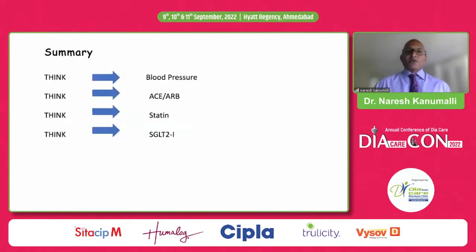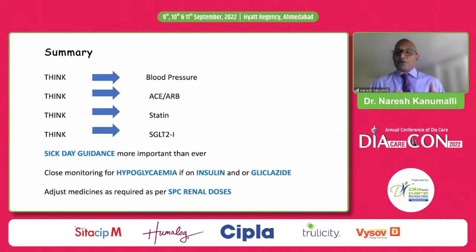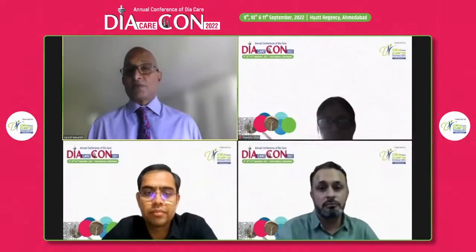In summary, when you see a person with diabetes or chronic kidney disease, think about blood pressure, consider ACE inhibitors or ARBs, think about a statin, and don't forget SGLT2 inhibitors. Sick day guidance rules are important — remember which drugs should be stopped to prevent acute kidney injury. Monitor closely for hypoglycemia with insulin or gliclazide when kidney function is poor, and adjust medications according to renal dosing. For metformin, halve the dose when eGFR is below 45 and stop it if below 30.